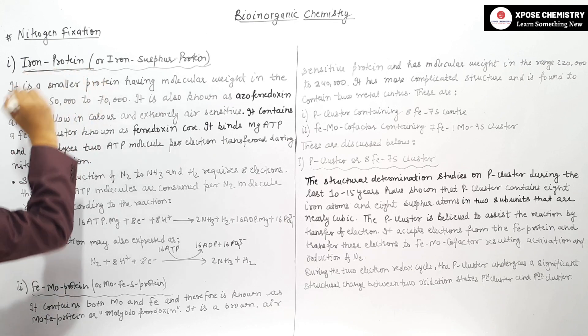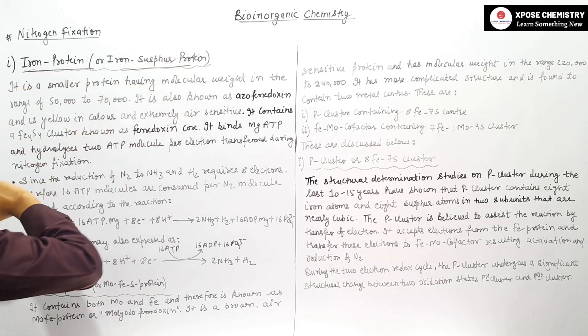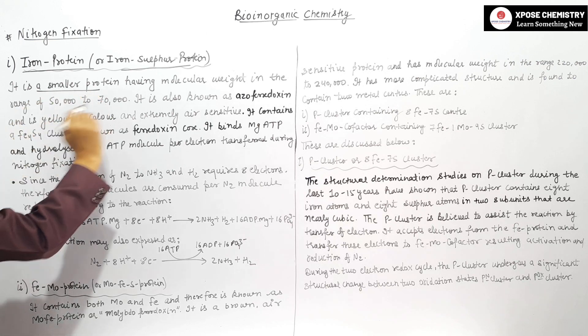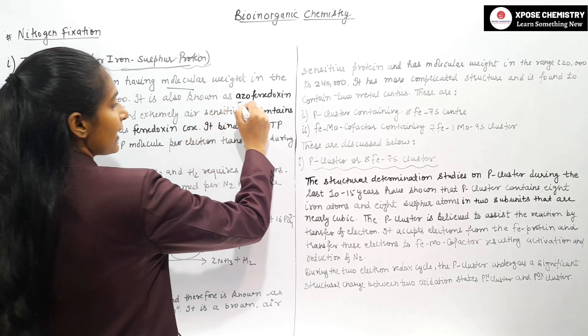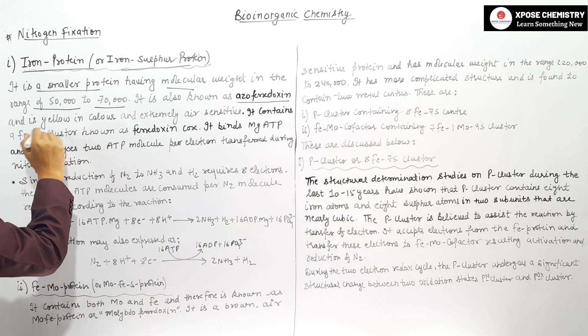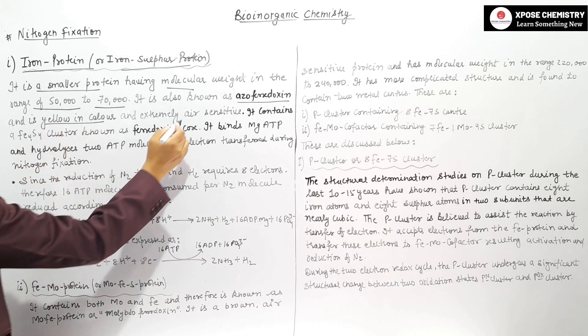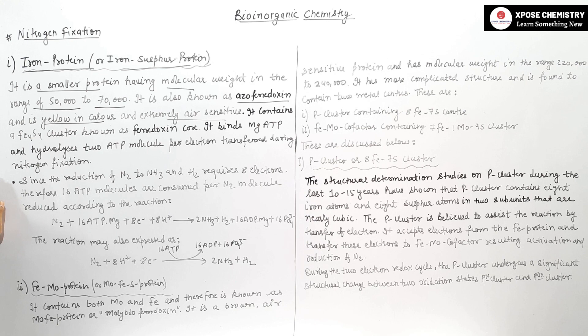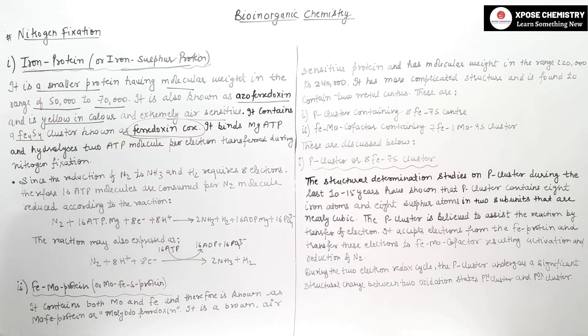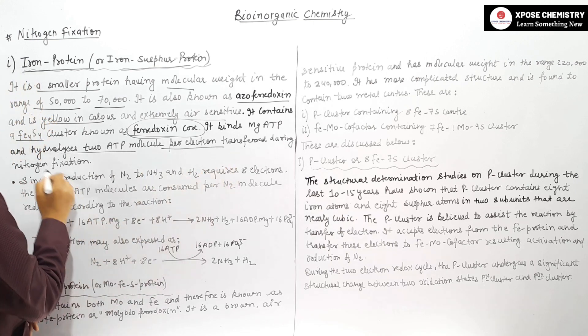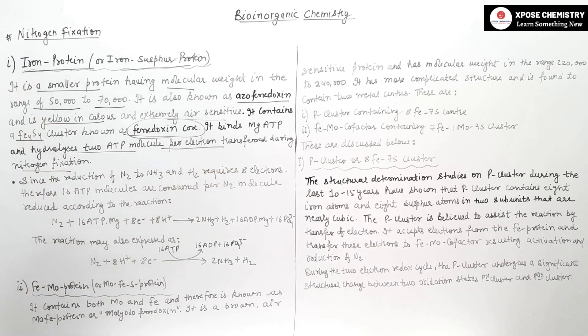Iron protein is small protein with molecular weight in the range of 50,000 to 70,000. It is called azo ferredoxin. It is extremely air sensitive, contains Fe4S4 cluster called ferredoxin core, and binds Mg-ATP and hydrolyzes two ATP molecules for electron transfer during nitrogen fixation.